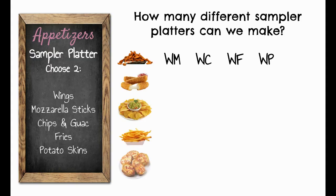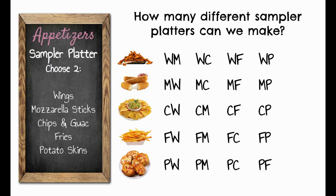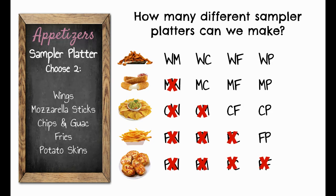Starting with mozzarella sticks, chips, fries, and potato skins, we list all their combinations. But wings with mozzarella sticks is the same as mozzarella sticks with wings — because the order doesn't matter. I don't care if they serve me wings first or mozzarella sticks first. So we eliminate the reversed duplicates, and in the end we have a total of 10 combinations for all of these different platters.